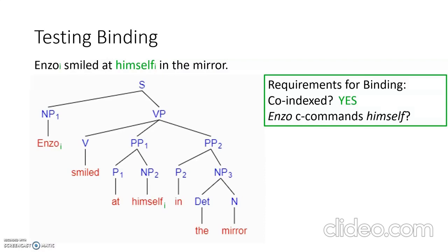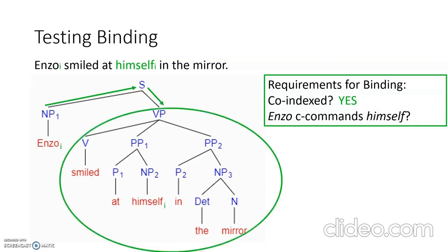Does Enzo C-command himself? C-command: you look at the node in question — Enzo, the noun phrase — go up one node, down another one, and everything underneath is C-commanded. So yes, Enzo does C-command himself. This means Enzo binds himself. Himself is bound by Enzo because we've fulfilled the two requirements for binding: co-indexing and C-command.